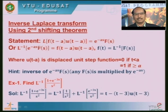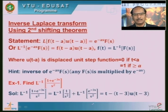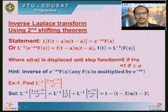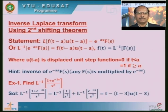Any function of s multiplied by e^(-as) uses the second shifting theorem. Here F(s) = 1/s² multiplied by e^(-3s), so a = 3. According to the second shifting theorem, the result is f(t-a)·u(t-a). I know f(t): it is the inverse of F(s) = 1/s², which is t. So f(t) = t. As per the theorem, f(t-a) means putting t = t-3 in f(t). Since f(t) = t, f(t-3) = t-3, giving (t-3)·u(t-3). This completes the inverse of this problem.